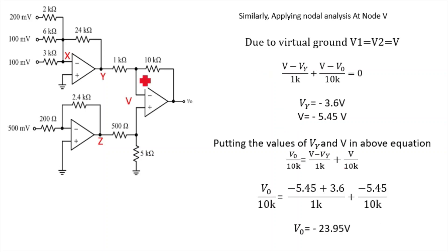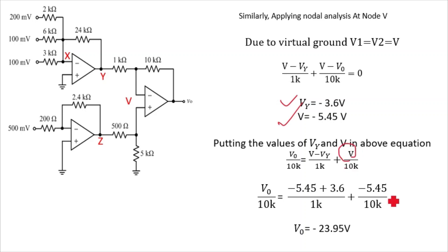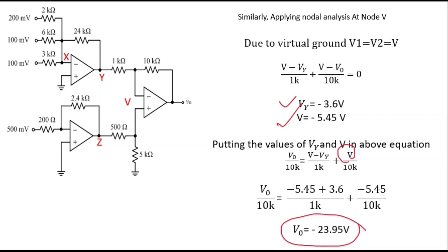Rearranging: V_naught/10k = (V − VY)/1k + V/10k. Substituting V = −5.45 and VY = −3.6: (−5.45 + 3.6)/1k + (−5.45)/10k. Solving this gives V_naught = −23.25 volts, approximately 24 volts. I hope you were able to understand the full solution. If you like it, please like and subscribe. Thank you for watching.